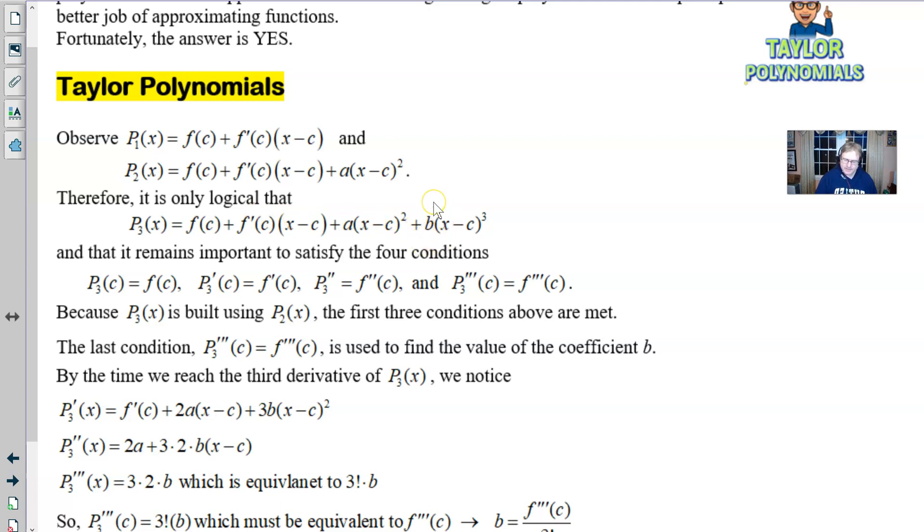The only thing is we're going to have to find this value of B. And if you recall, we actually did find the value of A in this particular case. We had discovered earlier that it was going to be a certain constant. We're going to get back to that here in a bit. So it remains important to make sure that we satisfy the same conditions.